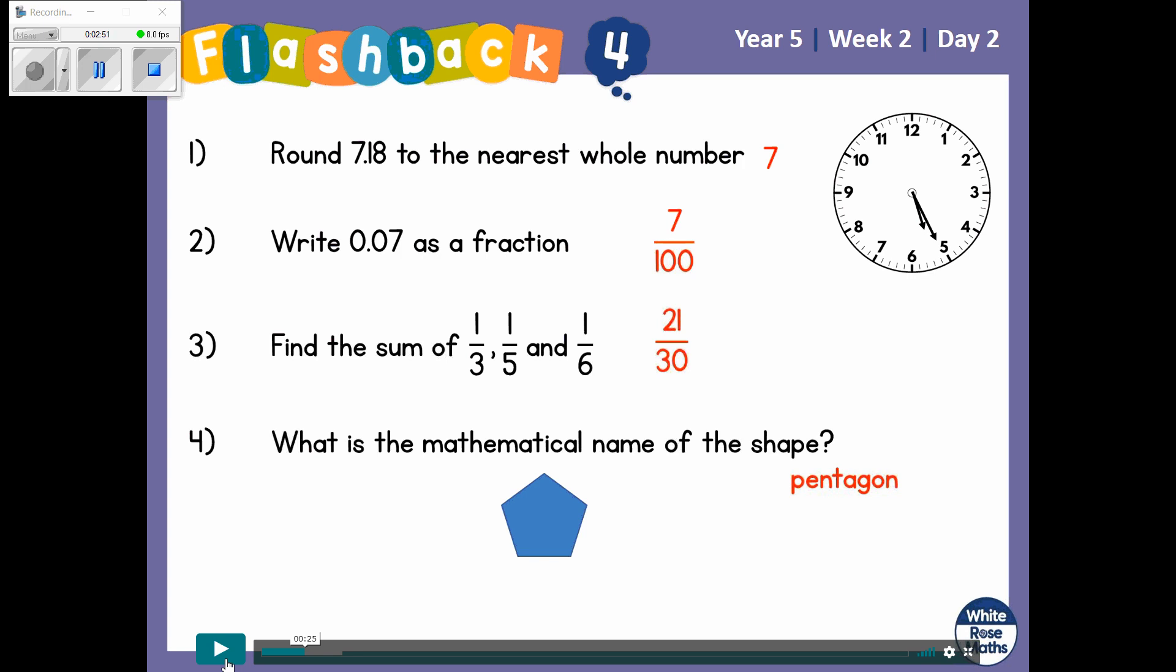So we get 6/30. And then to get 1/3 into 30, to get from 3 to 30, we need to multiply both the top and the bottom numbers by 10. So 3 times 10 is 30. That gives us our denominator of 30, that common denominator.